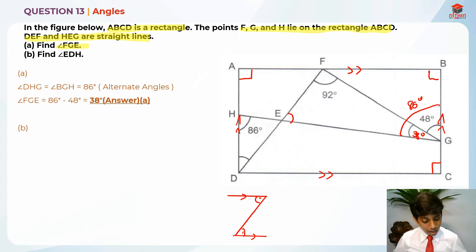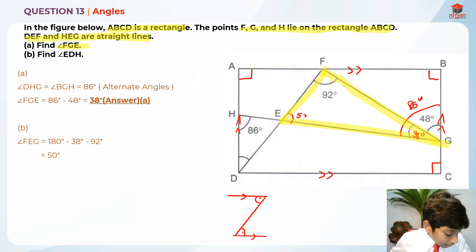So now that we know that this angle over here is 38 degrees, we can find this angle over here. So basically this is a triangle, this thing over here is a triangle. So I'm going to take 180 degrees minus 38 degrees minus 92 degrees to find angle FEG. So it will give us 50 degrees. Let me write that down. 50 degrees.